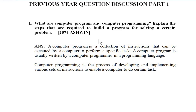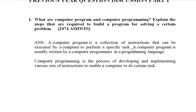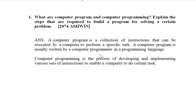First part: what are computer programs? A computer program is a collection of instructions that can be executed by a computer to perform a specific task. For example, if you want to add two numbers, you give a collection of instructions, you write a program, and the computer performs the task and you get the result. A computer program is usually written by a computer programmer in a programming language.